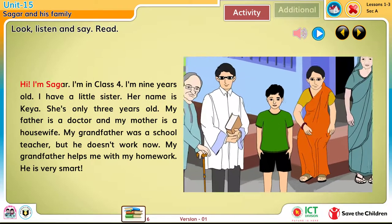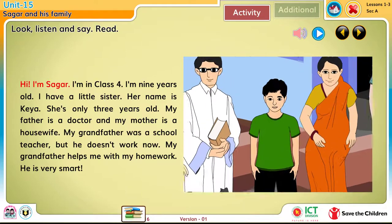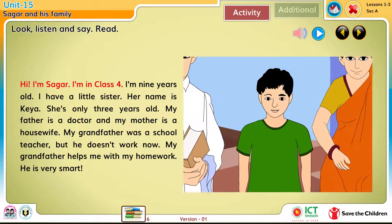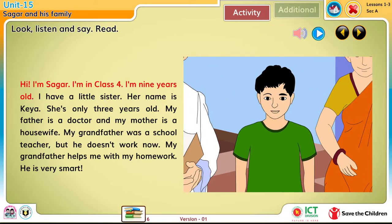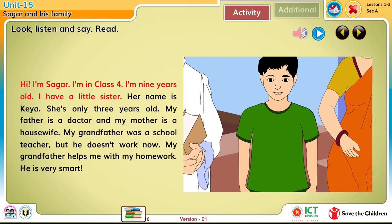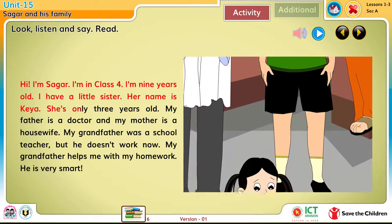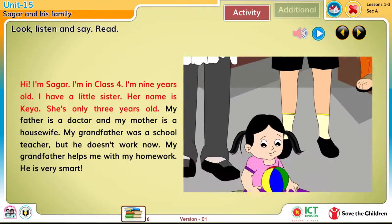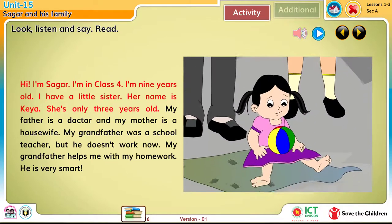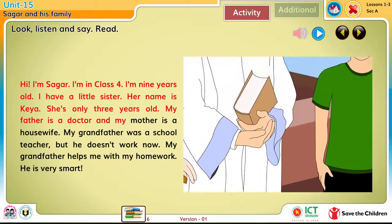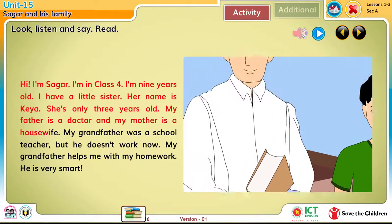Hi, I'm Shagor. I'm in class 4. I am 9 years old. I have a little sister. Her name is Kea. She's only 3 years old. My father is a doctor and my mother is a housewife.